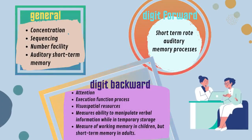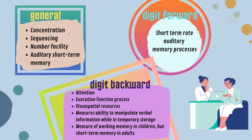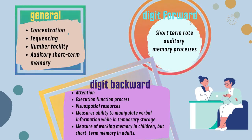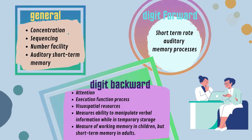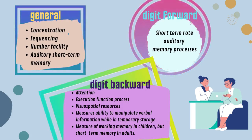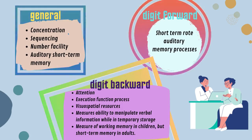Generally, the components assessed in Digit Span include attention, concentration, sequencing, number facility, and auditory short-term memory. Specifically, Digit Forwards assesses short-term auditory memory processes, while Digit Backwards assesses attention and executive function processes.